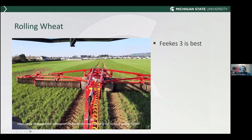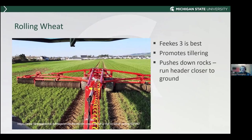Another topic is rolling wheat. When is the right time? Feekes 3 is the best time to roll wheat because it's still in the tillering stage. The reason you would roll wheat is for late-planted wheat that hasn't tillered out enough in the fall — rolling stimulates tillering by damaging the stem. Once you get to Feekes 4, tillering is over, and any damage to the stem is just damage — the plant isn't able to respond.